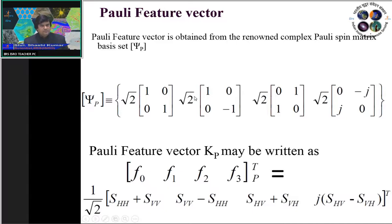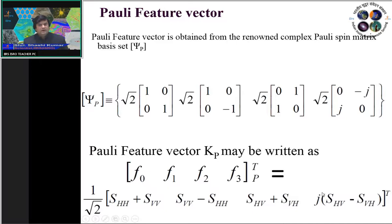When the first Pauli feature vector is applied to the scattering matrix, we get HH + VV. The second element gives HH - VV. The third element gives HV + VH. The fourth gives HV - VH (with an imaginary factor j). All these combine into a 4×1 matrix, which is the Pauli feature vector representation.